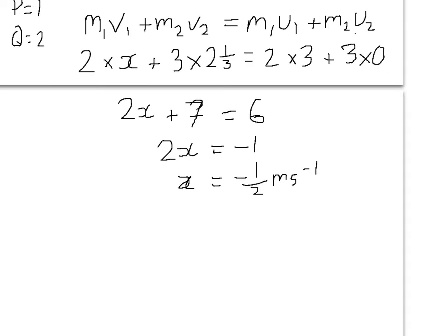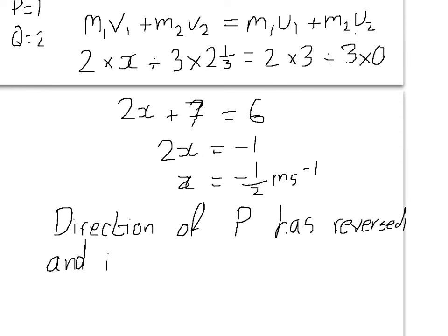But what does this minus speed mean? Well, it means that the direction of the speed is reversed. So you need to write down to the examiner that the direction of P has reversed and its new speed is half.